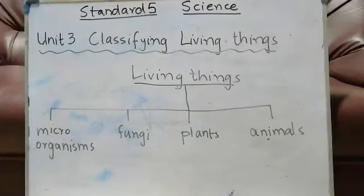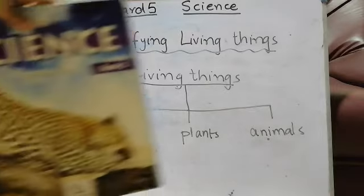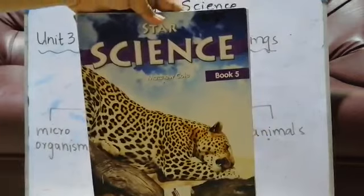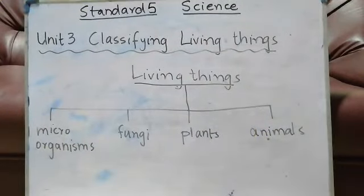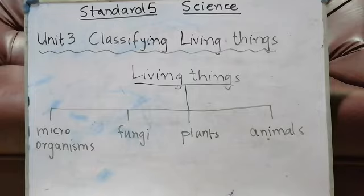Bismillah ar-Rahman ar-Rahim, assalamu alaikum. We'll start our science online class for standard five, classifying living things. We are following the Star Science Book Five by Matthew Cole. Living things are of various kinds, so they are divided into four main groups: microorganisms, fungi, plants, and animals.